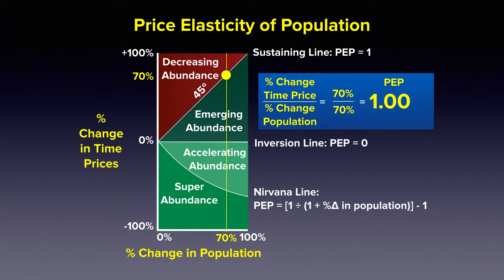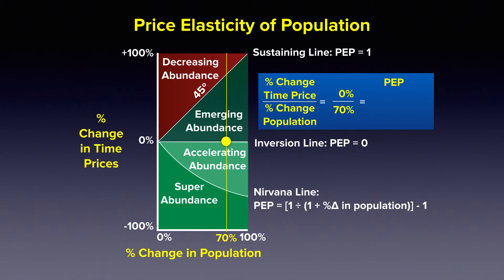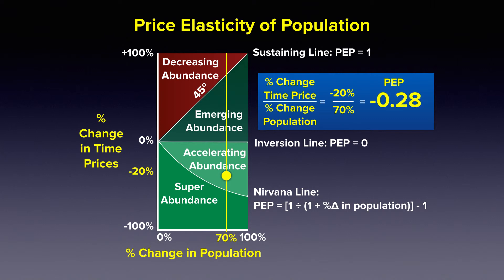If prices are increasing at a lower rate, say 50%, our PEP would still be positive but less than 1, indicating the emerging abundance zone. If prices are not changing at all, our PEP would be zero — right on the inversion line — indicating no price change as population increases. If prices began to decrease, say minus 20%, our PEP would be negative, indicating the zone of acceleration.